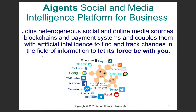The project has a few different perspectives, or three different missions. The first mission is the business mission: to create a product which enables businesses, mostly medium and small businesses, to join geo-contextual social and online media sources, blockchains and payment systems, coupling them with artificial intelligence, and let companies find and track changes in information flows to make use of these flows and power their particular business activities.